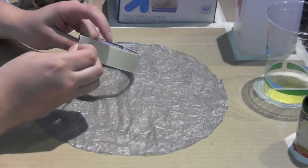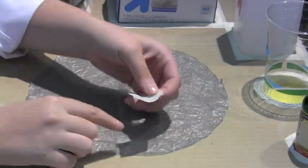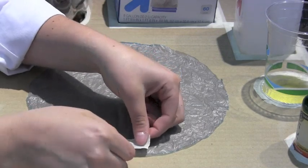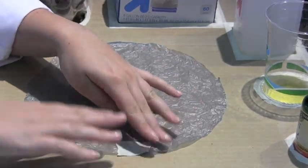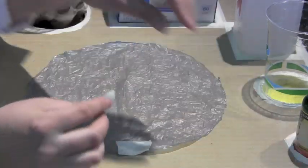Then, take an inch long piece of tape and place it at the end of the crease. Now take another inch long piece of tape and place it on the other end of the crease.